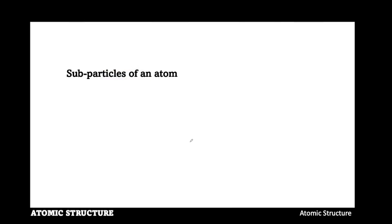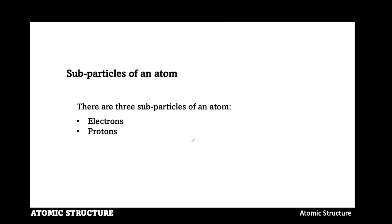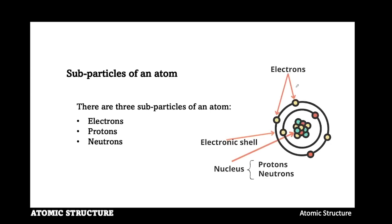There are three sub-particles of an atom. They are electrons, protons, and neutrons. On the slide on the right-hand side is an atomic structure of an atom. The nucleus is the central part of an atom. It has two sub-particles, that is, protons and neutrons.